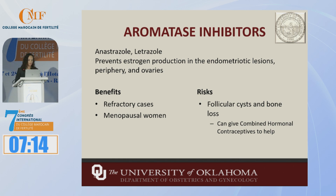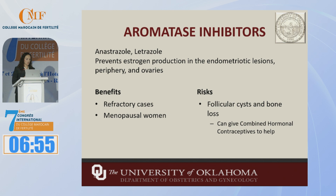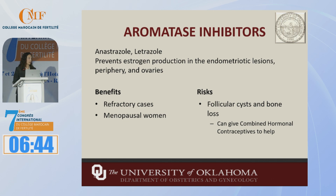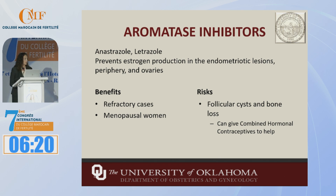Next are the aromatase inhibitors, which were looking really promising — anastrozole and letrozole. These prevent estrogen production in the actual lesions, but also in the periphery and the ovaries. Postmenopausal women only create estrogen within their periphery, so this is helpful because it specifically targets that. The downside is that many women get follicular cysts and bone loss, so they need to be on a combined hormonal contraceptive alongside it to help prevent those cysts. Some more recent studies are showing conflicting data as to whether these are actually as effective as once thought.